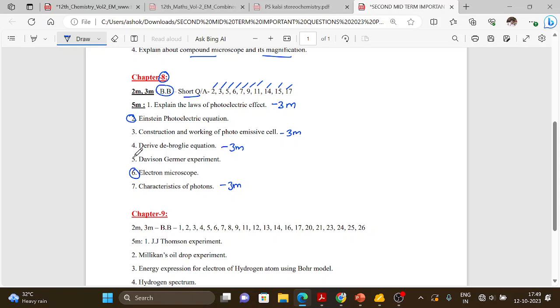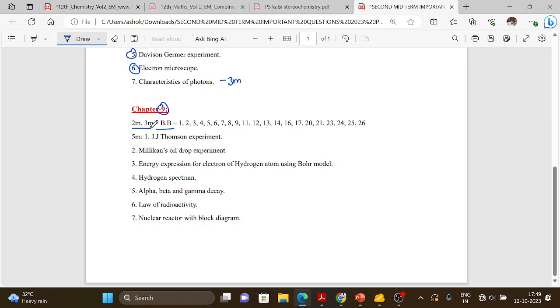For five mark, Einstein's photoelectric equation, electron microscope, and Davisson-Germer experiment are important. Chapter 9 short question answers: 1, 2, 3, 4, 5, 6, 7, 8, 9, 11, 12, 13, 14, 16, 17, 20, 21, 23, 24, 25, 26. Actually, this lesson is very important, like in chemistry where certain chapters are crucial. Five mark important questions include Millikan's oil drop experiment, energy expression for hydrogen atom using Bohr model, and hydrogen spectrum. These are easy questions for five marks.